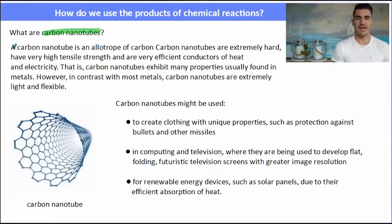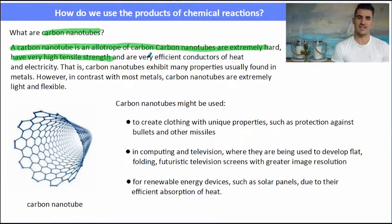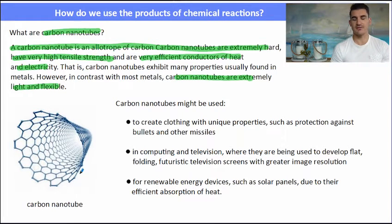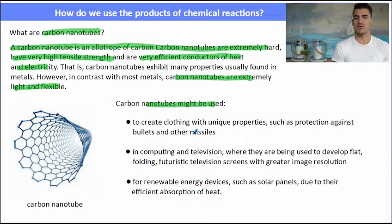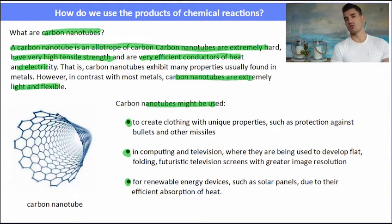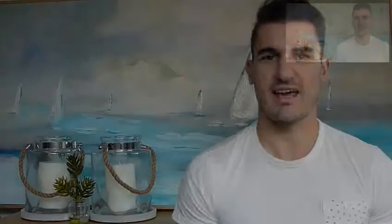Carbon nanotubes are made from carbon and have been found to be extremely hard, with very high tensile strength and efficient conductors of electricity. A carbon nanotube is essentially a lattice of carbon that's been folded around itself to make a tube. Carbon nanotubes are very important for the electronics industry — they've been used for their conductivity and strength to make things with greater image resolution and more efficient energy devices, and because they're also so strong, they've been used in Kevlar.